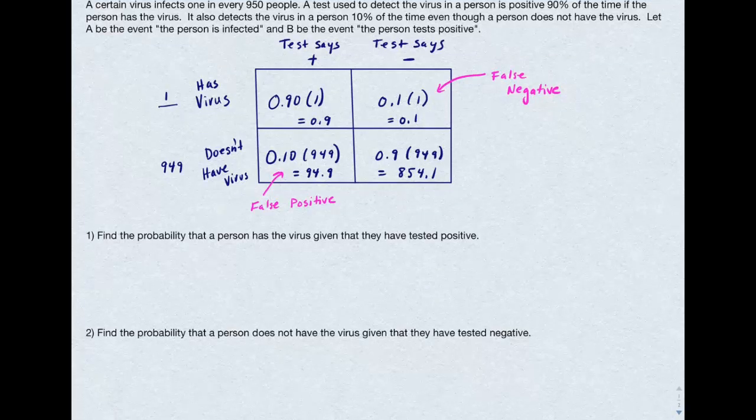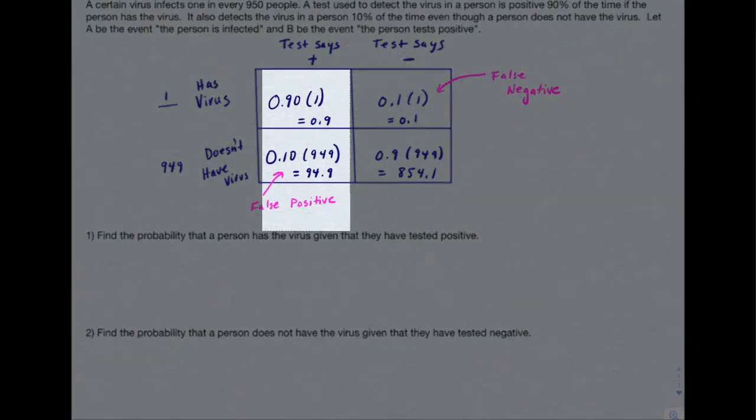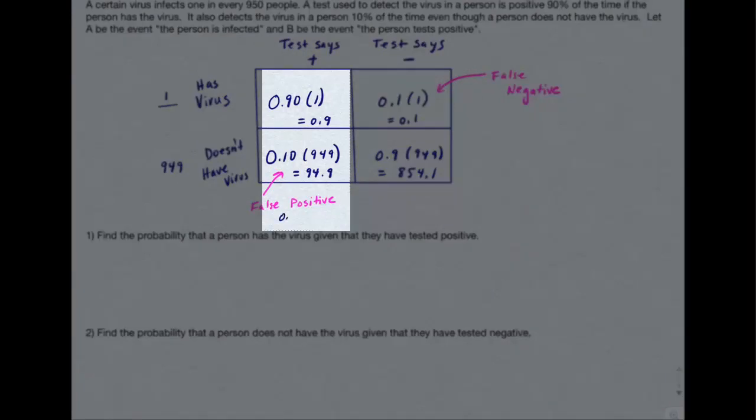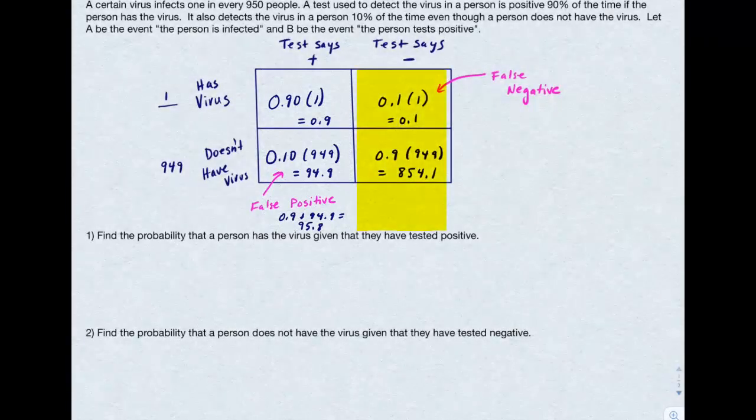So let's look at our actual questions. The first question says, find the probability that a person has the virus given that they've tested positive. First I need to find the totals for each column. The number of people that the test says has the virus is 0.9 plus 94.9 or 95.8.